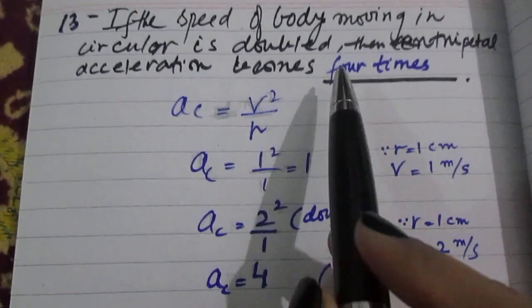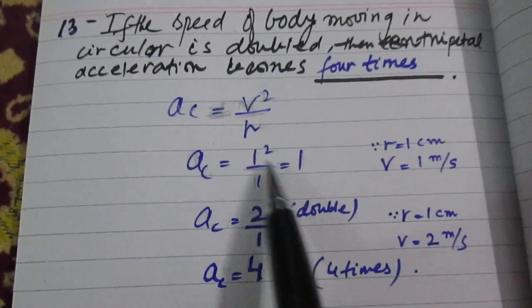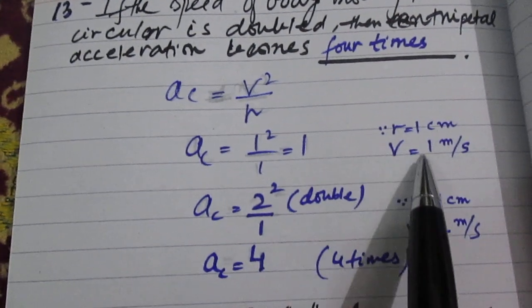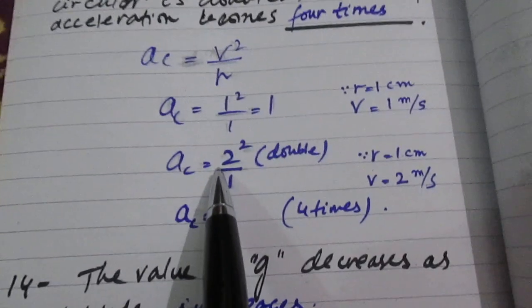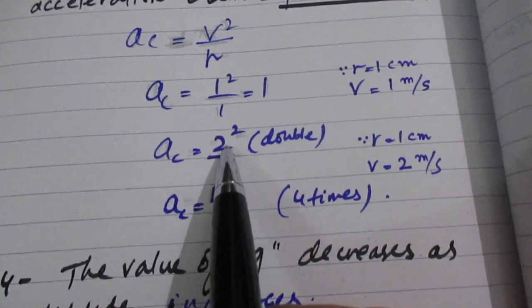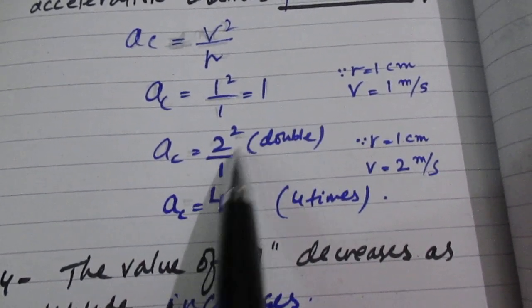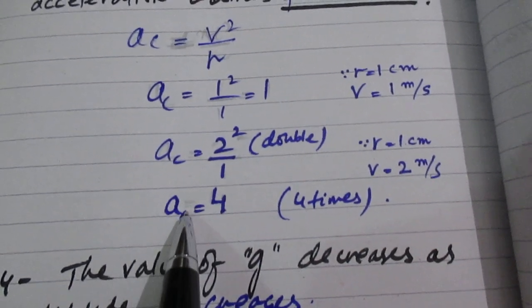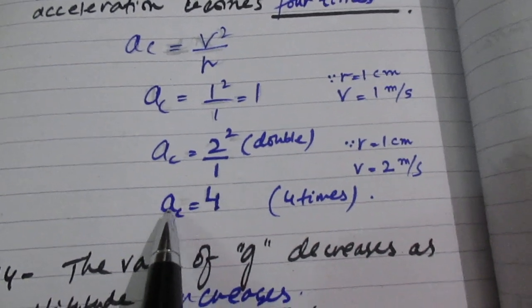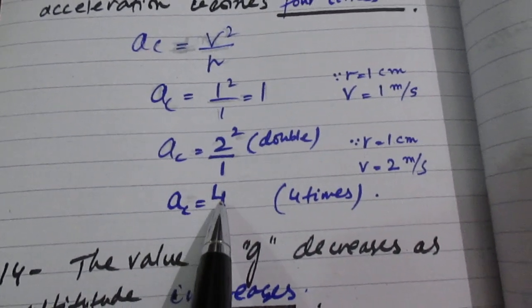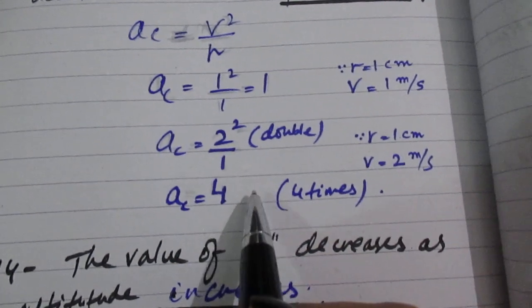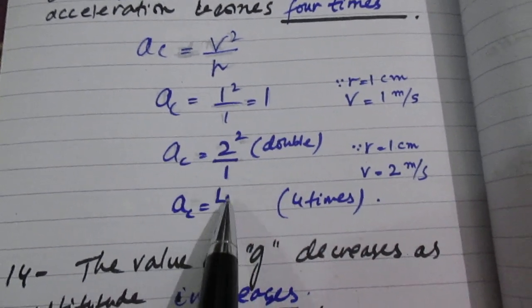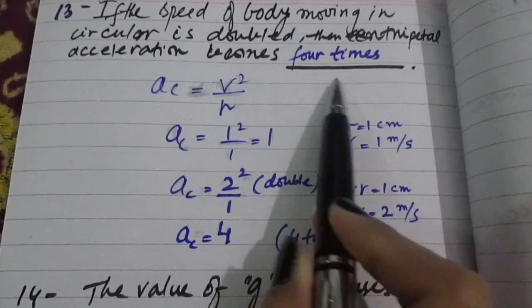If acceleration has to be 4, you have to double the velocity. First it was 1, now you double it to 2. Now what is the acceleration? 2 squared is 4, and upon 1 because the radius is 1 cm. So your centripetal acceleration is 4. That means it has increased 4 times. Before it was 1, when I doubled the velocity it increased 4 times. So this was basically the logic behind it.